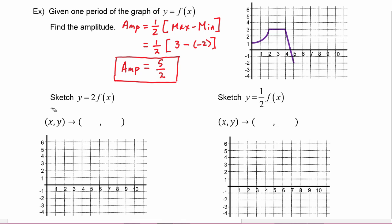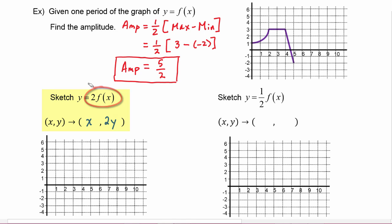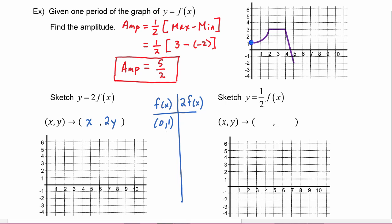Next we're being asked to sketch y equals two f(x). Remember from college algebra that a coefficient in front of f(x) affects the y-values of the graph, so every point (x, y) on the graph of f(x) is going to turn into (x, 2y) on the graph of two f(x). The point (0, 1) on f(x) becomes (0, 2) on two f(x).